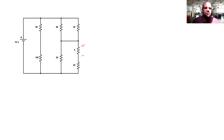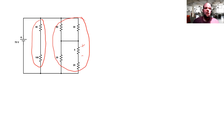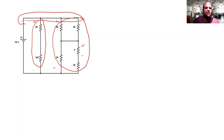One thing to notice is we have two separate parts to this circuit — we have this part here and we have this part over here. It should be noted that there's 70 volts across each of these. So I have 70 volts across here and I have 70 volts across here. That's what the 70 volt supply being connected to each node means. I know there's 70 volts across each of these parts of the circuit.